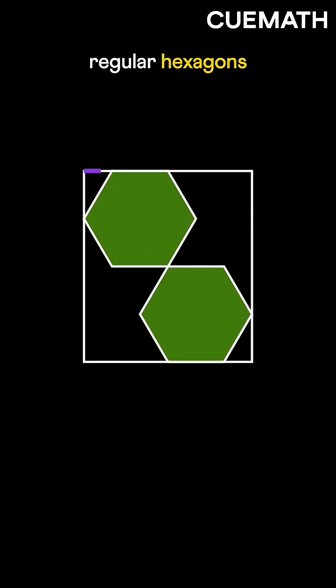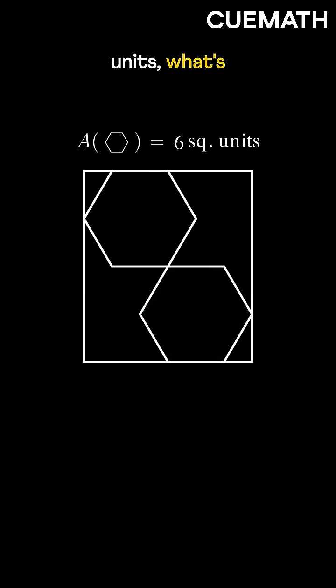Now if two regular hexagons placed inside a rectangle, each have an area of six square units, what's the shaded area?